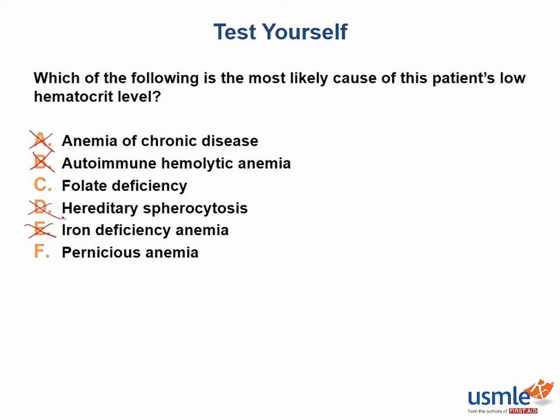So now we're down to folate deficiency and pernicious anemia. At this point I'm using pernicious anemia as my substitute for B12 deficiency. Both B12 deficiency and folate deficiency can cause a hypersegmented neutrophil and an anemia with an elevated MCV, but only B12 deficiency gives you the nerve-related issues. After working through all that, I would select my answer and move on — I wouldn't mark it to come back, because I knew I'd done everything I could to arrive at the correct answer.